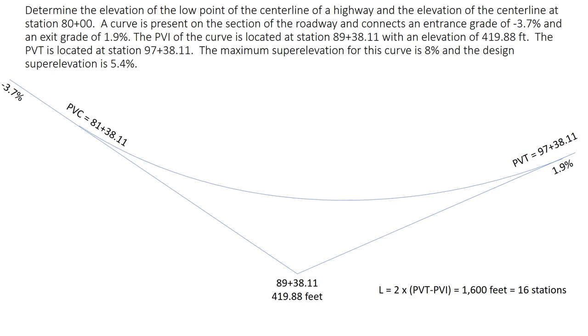That also allows us to calculate the station of the PVC. It's going to be 800 feet before the PVI, so that's at a station of 81+38.11.